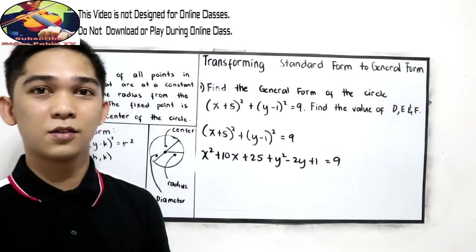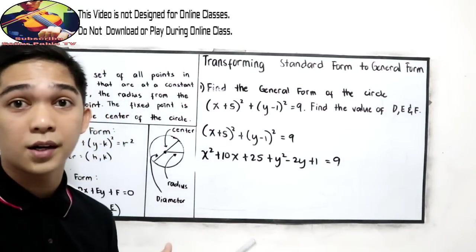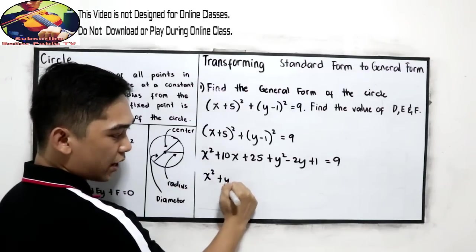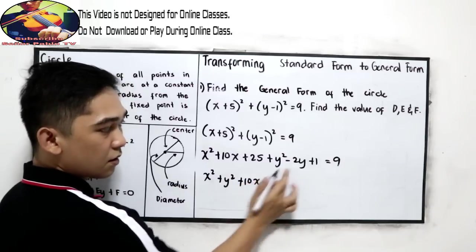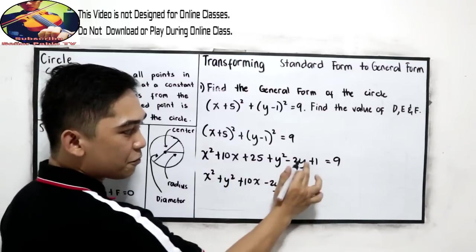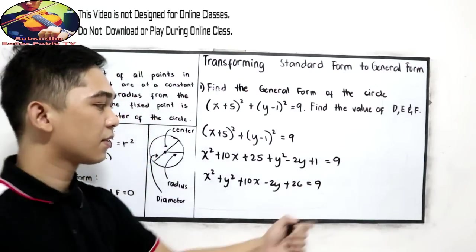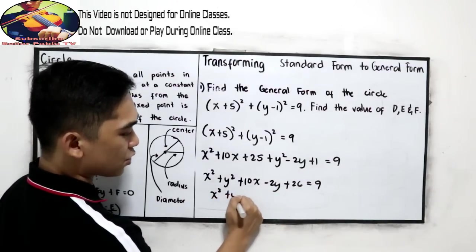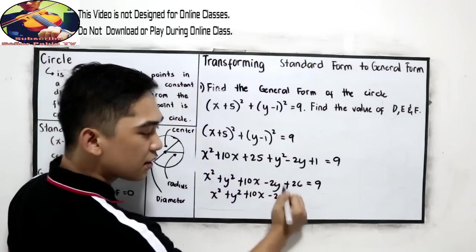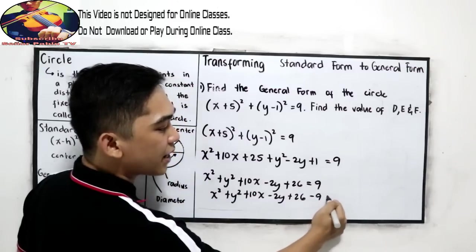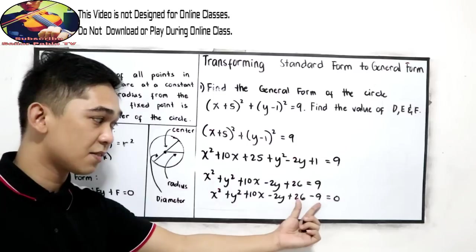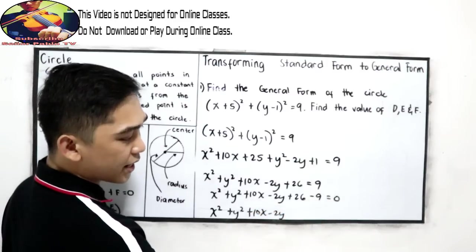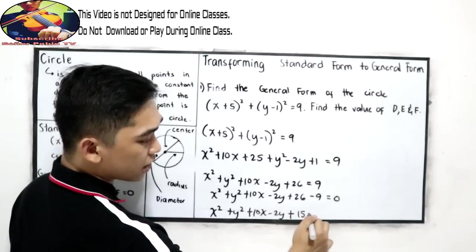Now combine like terms while rearranging our equation. So: x squared, plus y squared, plus 10x, minus 2y. Then 25 plus 1 gives positive 26, is equal to 9. Again, our general form is equated to 0, so: x squared plus y squared, plus 10x, minus 2y, plus 26 minus 9, is equal to 0. Combining 26 minus 9 gives positive 17, so: x squared plus y squared plus 10x minus 2y plus 17 is equal to 0.